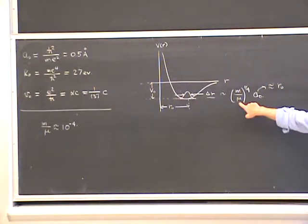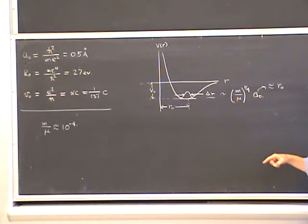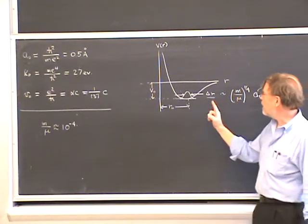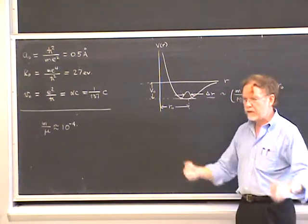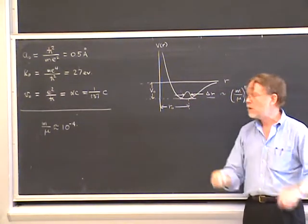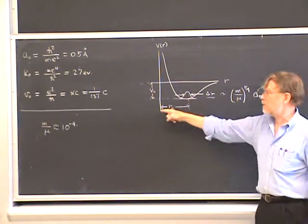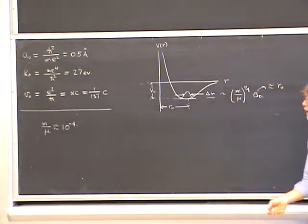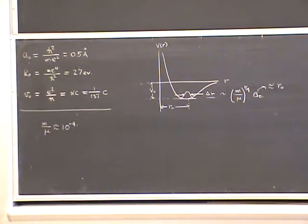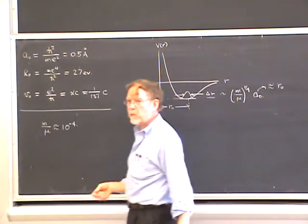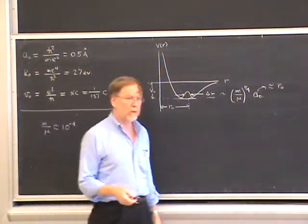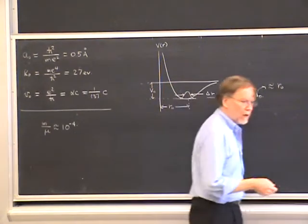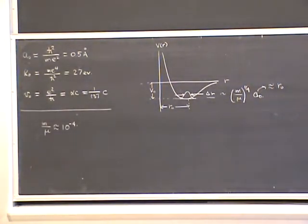Raising this to the one-quarter power, we get one-tenth, and we come to the conclusion that the vibrational amplitude of the diatomic molecule as it vibrates is roughly about 10% of the bond length. As a result, the diatomic molecule roughly speaking does behave as a rigid rotor, which we started talking about before we got into molecules.